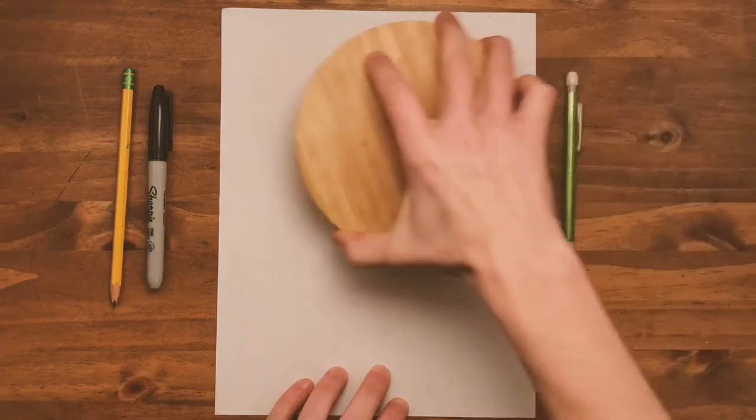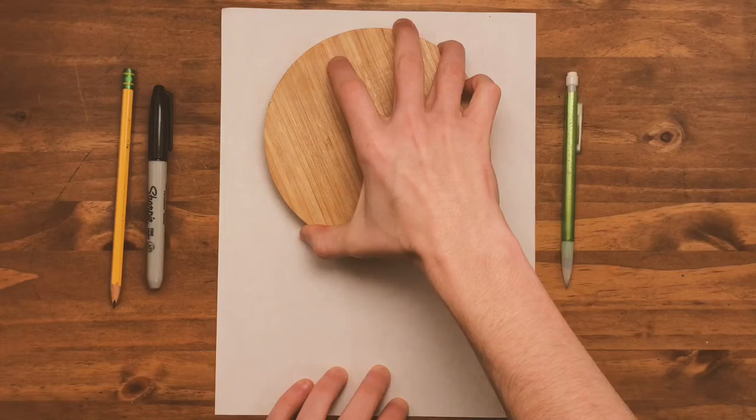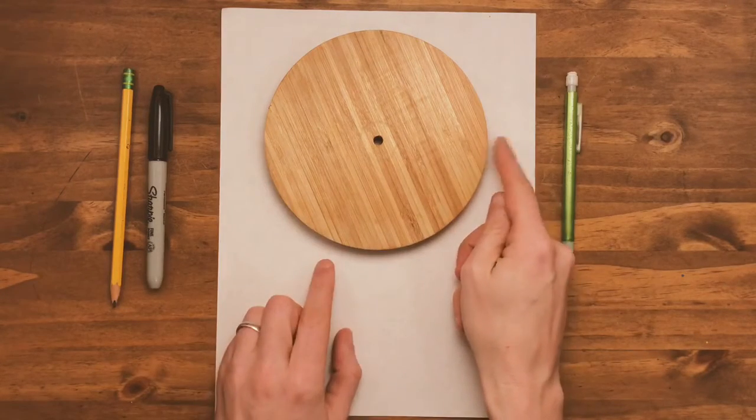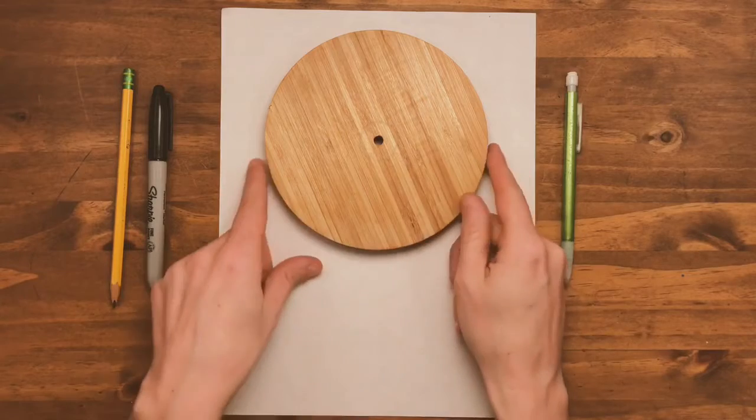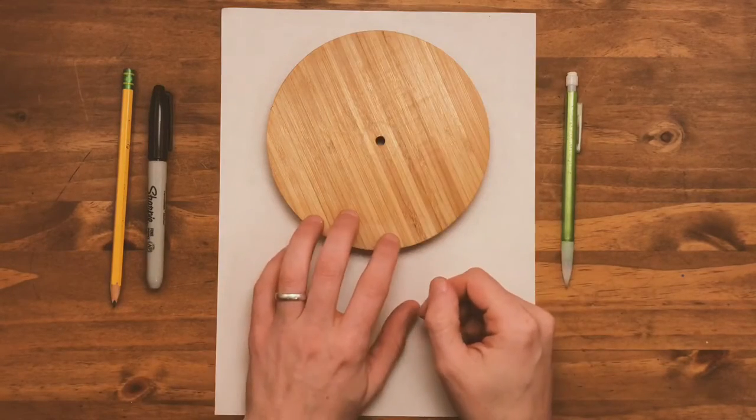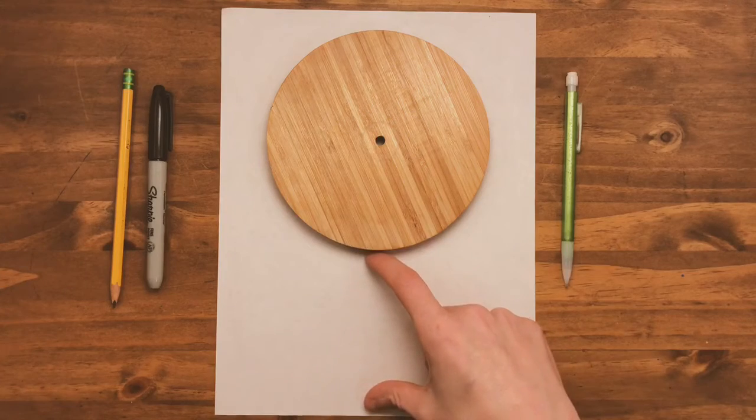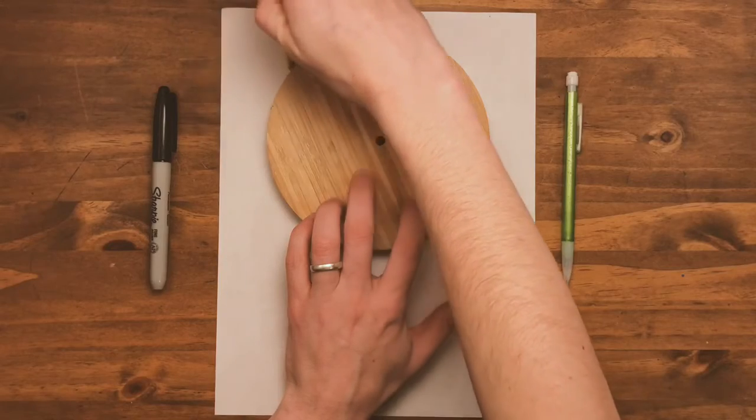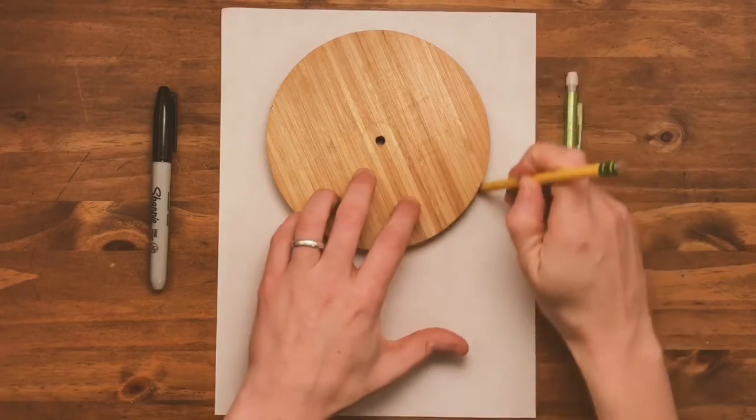So you're going to take your circle. Put it near the top of your paper. Making sure there is an equal amount of space on both sides of our circle. Make sure it is down from the top of your paper and you have room on the bottom for your person. Then take your pencil and trace your circle.